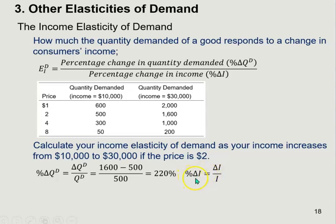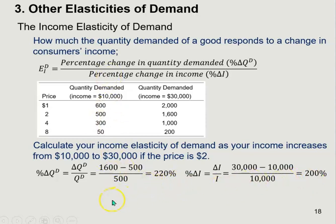Similarly, the percentage change in income uses the final level $30,000 minus the initial $10,000 divided by $10,000, giving a percentage change in income of 200%. Plugging these into the income elasticity of demand formula: 220% over 200% gives an income elasticity of 1.1. In other words, when your income goes up by 1%, your quantity demanded will go up by 1.1%.